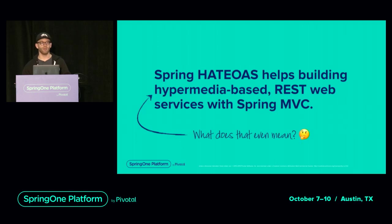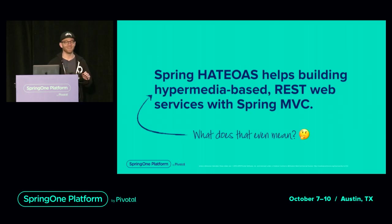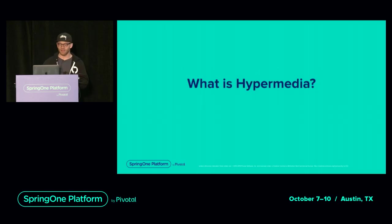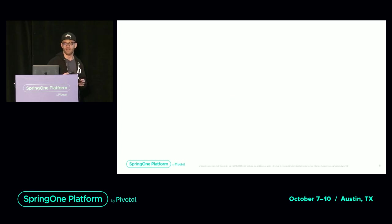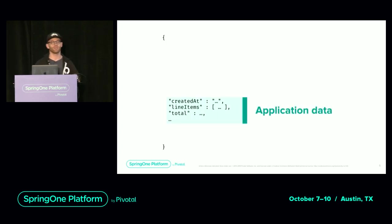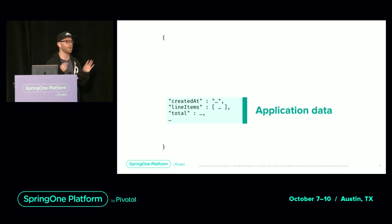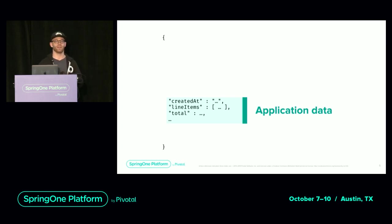So what is this hypermedia thing? The idea is that you start with some representation — some JSON document that carries a couple of properties of your application data. So let's say we deal with orders here. The examples will be about orders and payments. There's application level data inside that JSON document, and the hypermedia aspect of REST says that you're not only shipping data to the client but also shipping instructions or information about the resource's state in the form of hypermedia elements.